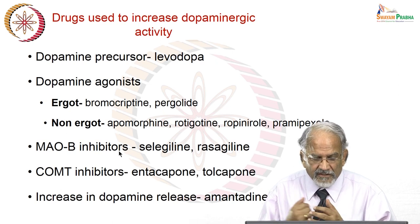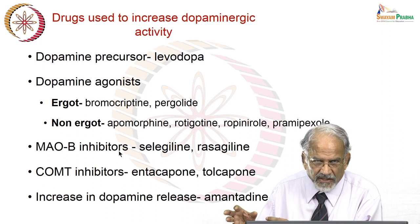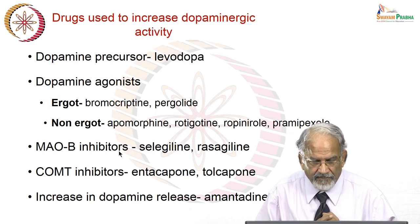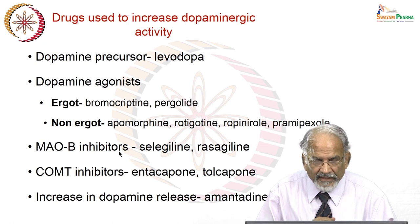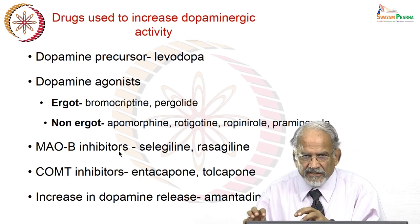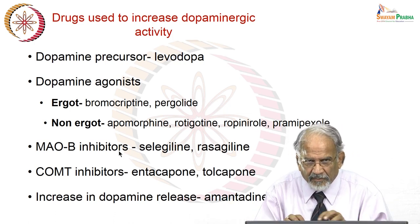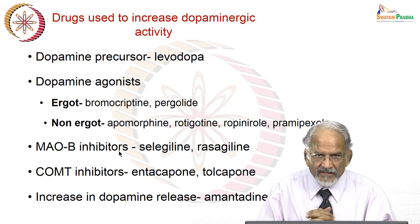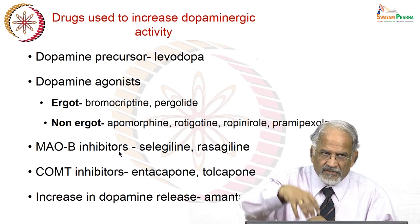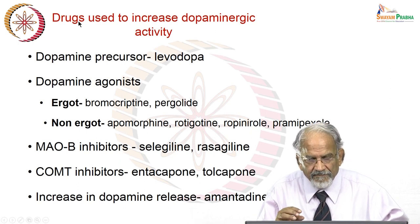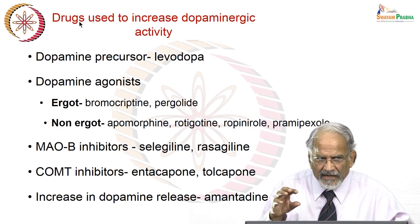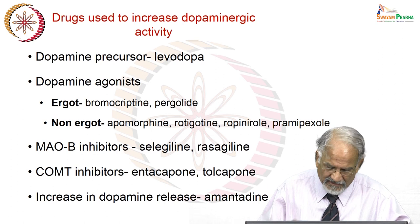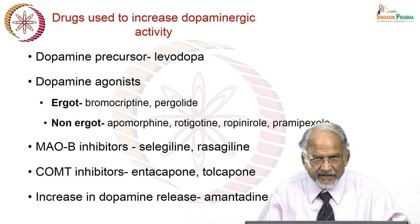COMT inhibitors for preventing extra-neuronal metabolism of dopamine are entacapone and tolcapone. This mechanism is less important than the others, so these drugs are not the primary line of treatment but are often supplemented. Amantadine is primarily an antiviral drug but has also been found effective in increasing dopamine release; it has been tested and found useful in some cases of Parkinsonism.